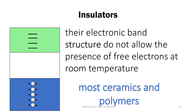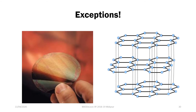Insulators meanwhile have almost the same structure as intrinsic semiconductors, but with a much larger band gap. Due to this, their band structure does not allow the efficient creation of free electrons at room temperature, which makes them insulating. This usually applies to most ceramics and polymers, though not all — for example, graphite is a ceramic material but is one of the best electronic conductors we have, due to its structure.